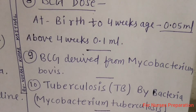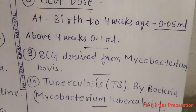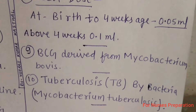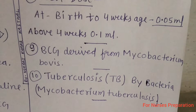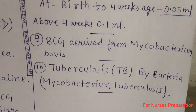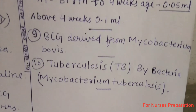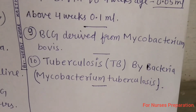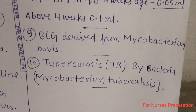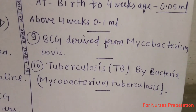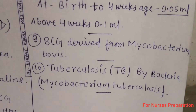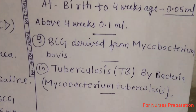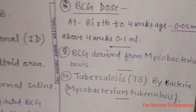Point number 9: BCG vaccine is derived from the Mycobacterium bovis bacteria. Point number 10: Tuberculosis or TB disease is a bacterial disease and it is caused by Mycobacterium tuberculosis.